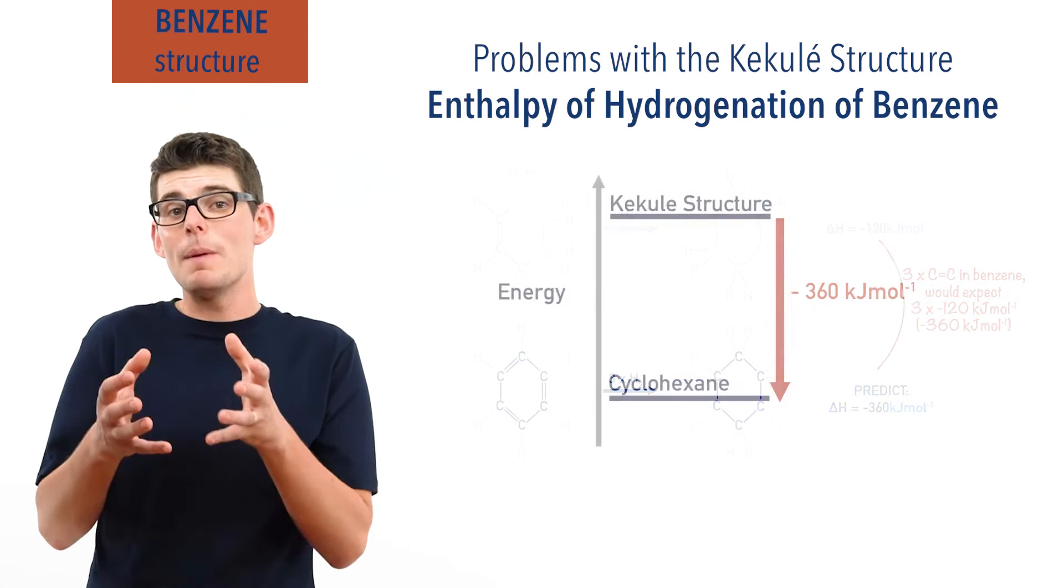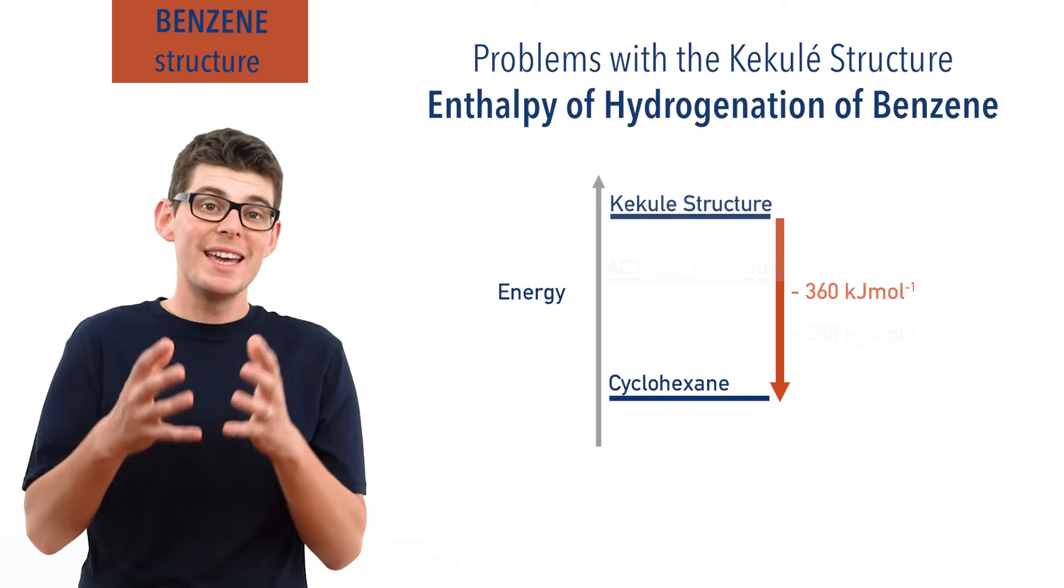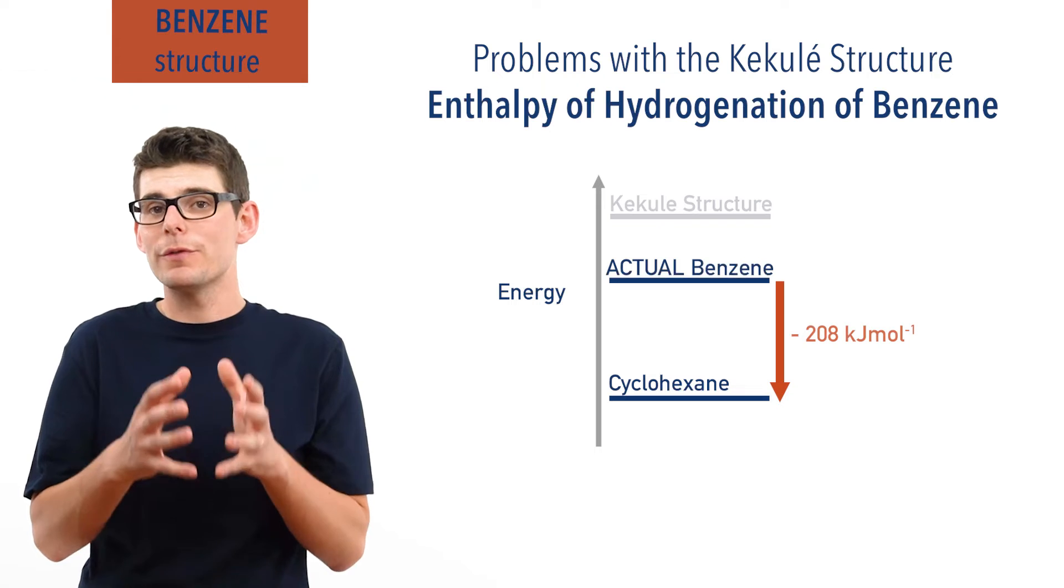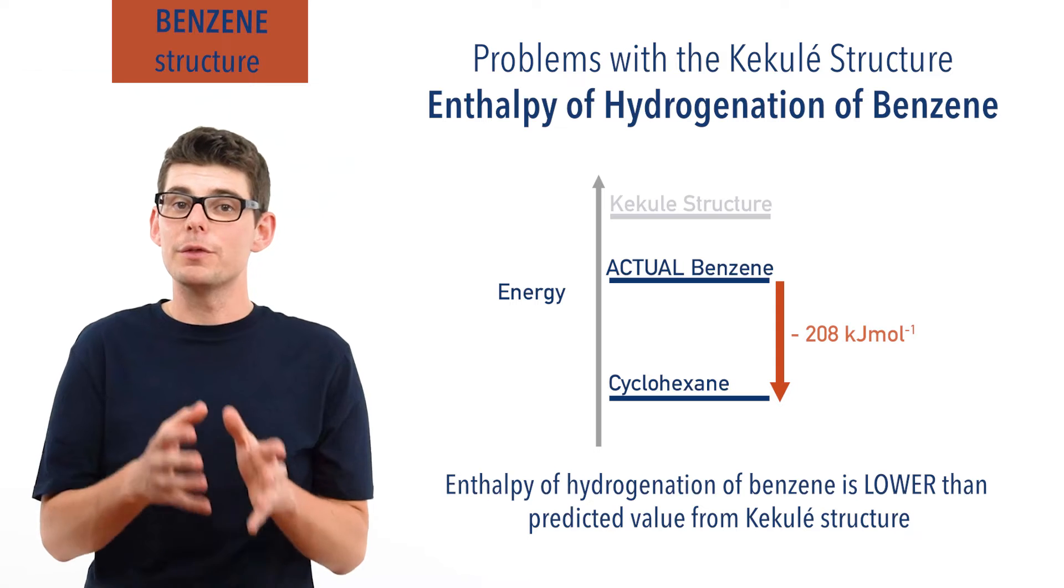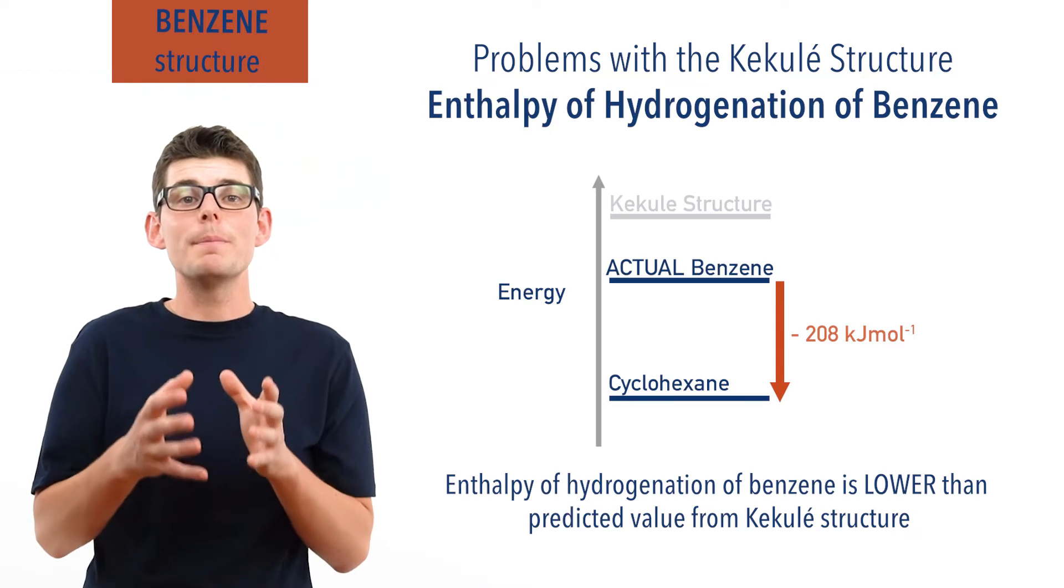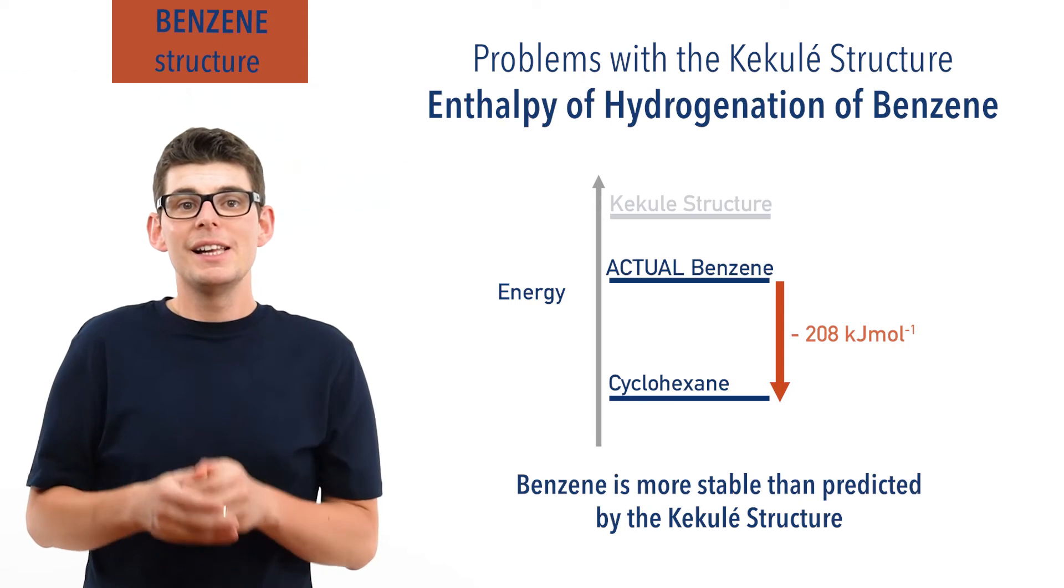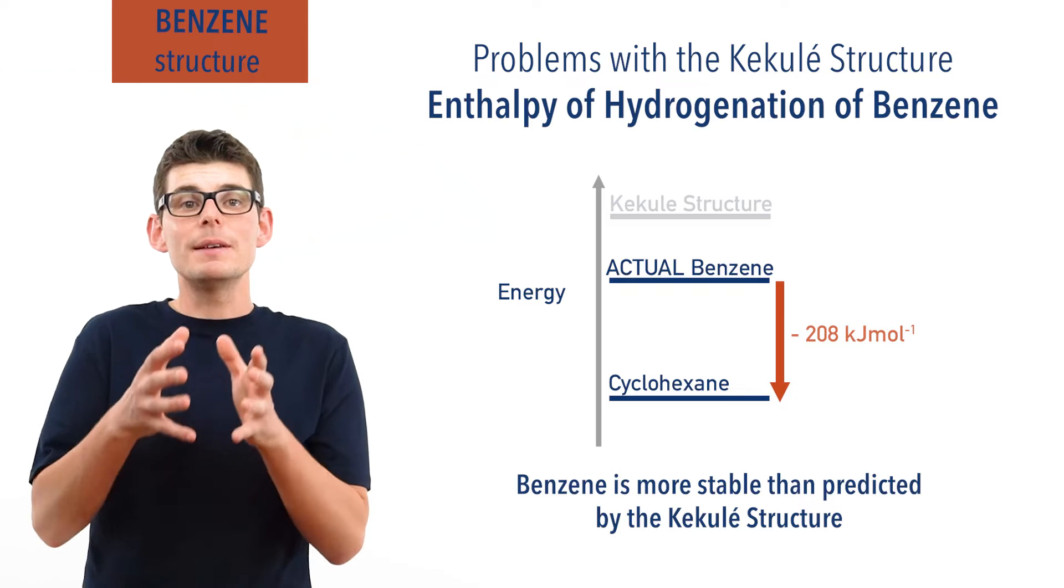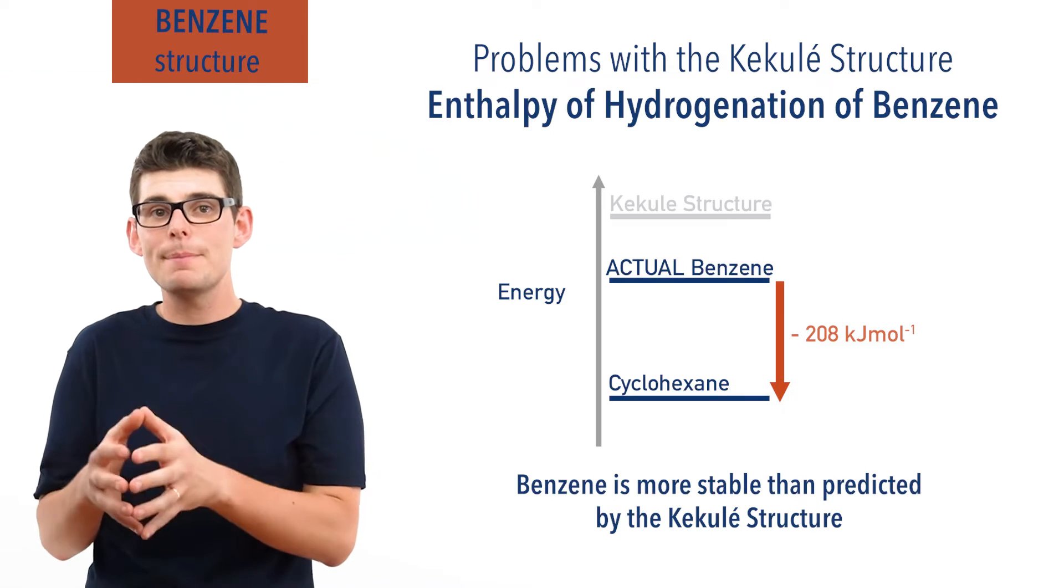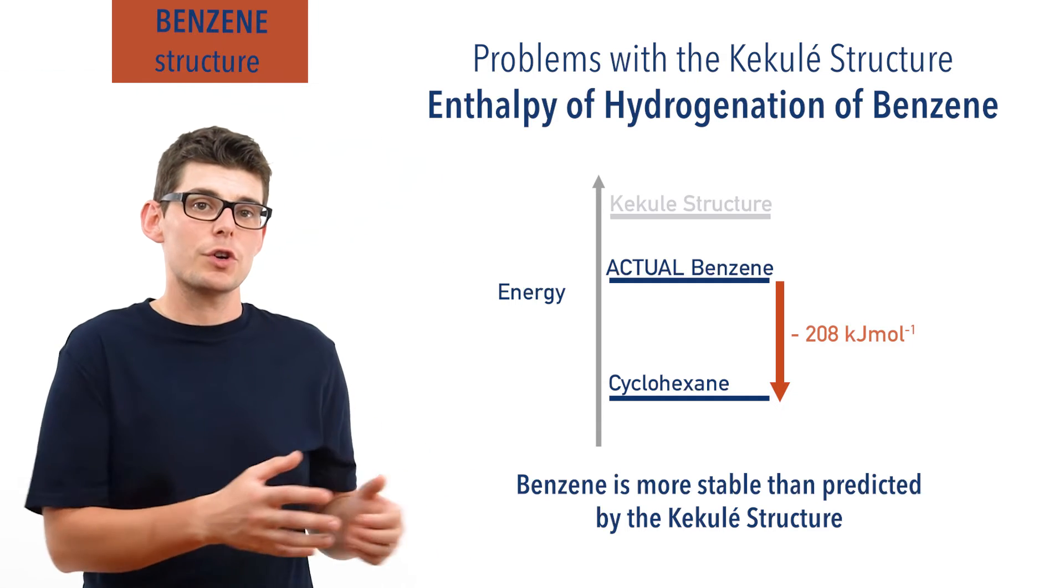The problem is when benzene is hydrogenated, the actual measured enthalpy change is only minus 208 kilojoules per mole. This is way lower than the predicted value from the Kekulé structure and shows that benzene is more stable than predicted. Less energy released when benzene is turned into cyclohexane means it must already have been more stable and closer in energy to cyclohexane than predicted by the Kekulé structure.